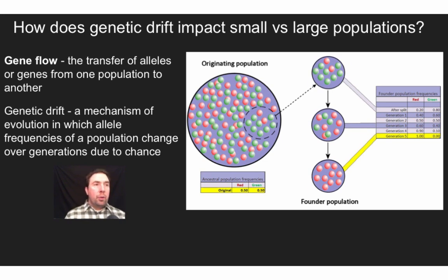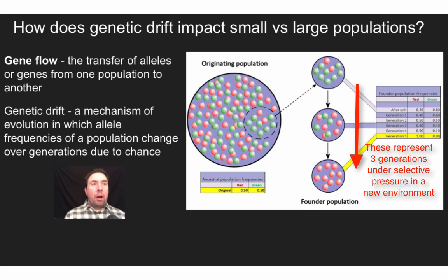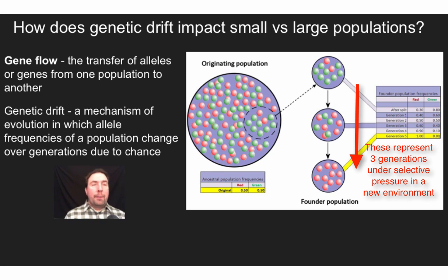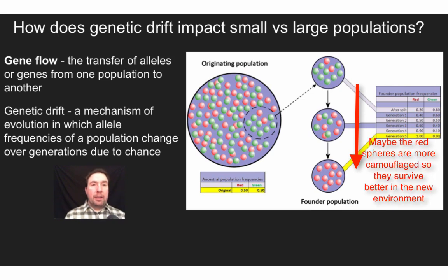When these individuals mate and reproduce, the next generation shifts a little bit, and the next generation shifts a little bit more, and based on the allele frequencies we may find that the ultimate population ends up 100% red spheres. This happened because a chance event — genetic drift — led from our original population to a small founding population that ended up on this island with a different allele composition.